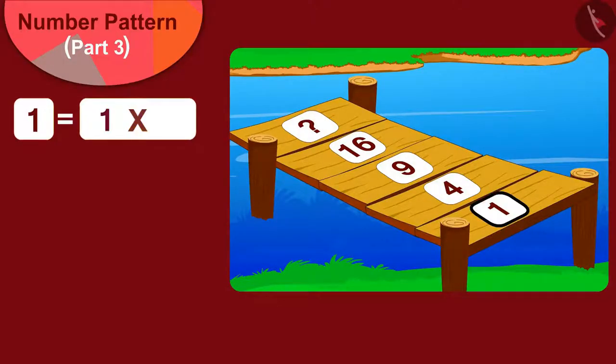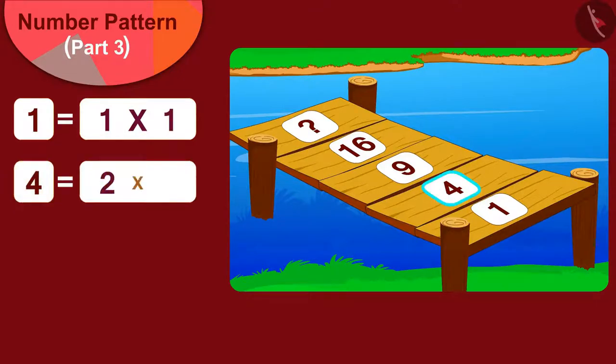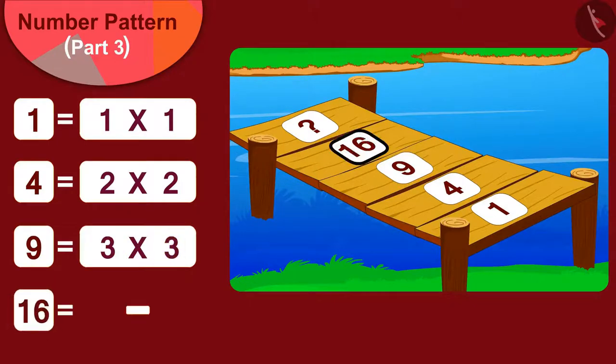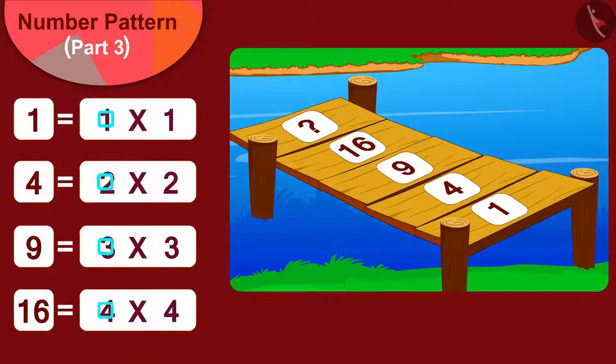"Sixteen can be written as four times four. This means that the number written on the plank can be found by multiplying the number of the plank by itself," Chanda excitedly told the villagers.